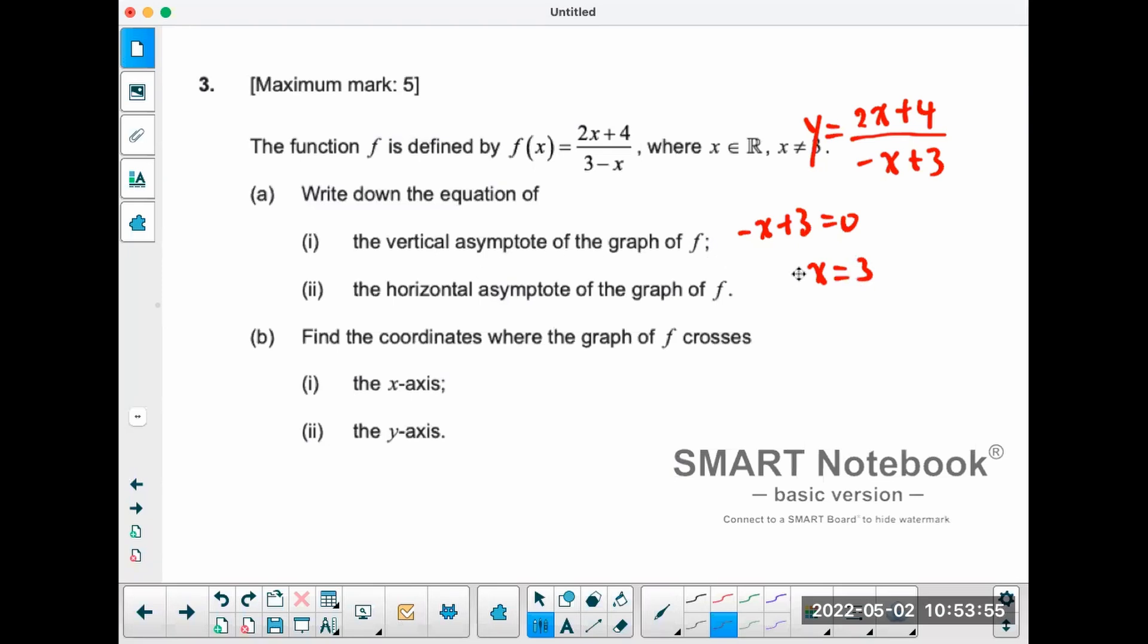The horizontal asymptote of the function—being this is a linear over linear, x to the power one over x to the power one—then it's just the coefficients, which is two divided by negative one.